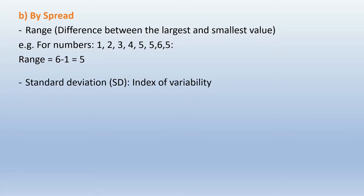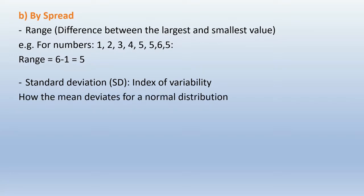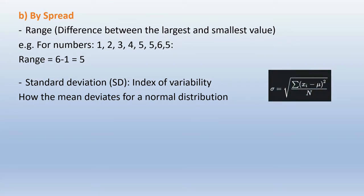We have standard deviation as another measure of spread. This is an index of variability — it shows how the mean deviates from a normal distribution, and it is the square root of variance.